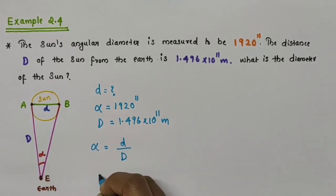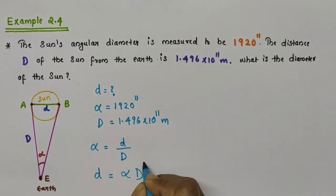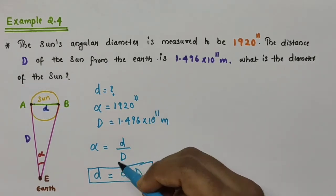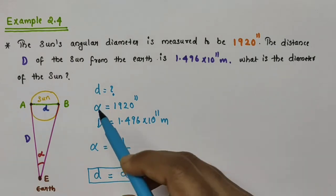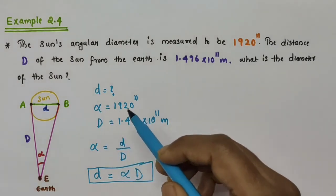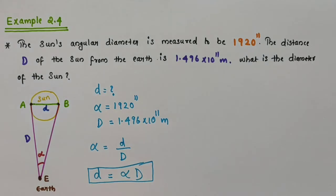From this expression we can write the diameter of the sun, small letter d, equal to alpha × D. This is the equation we want to use here. But before substituting values, we have the angular diameter in arc seconds, so we need to convert it to radians first.